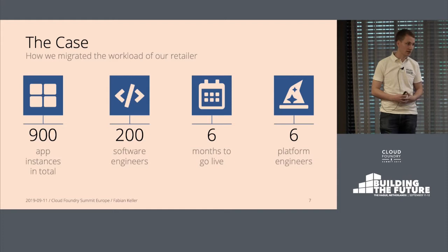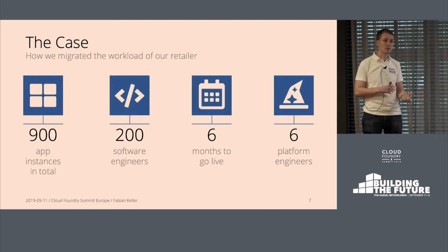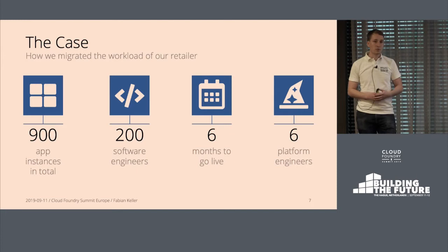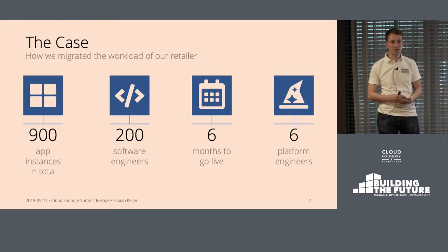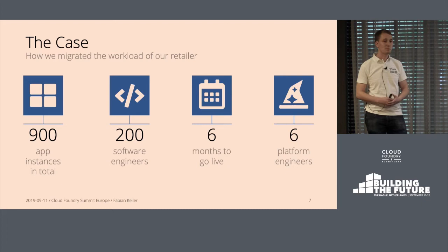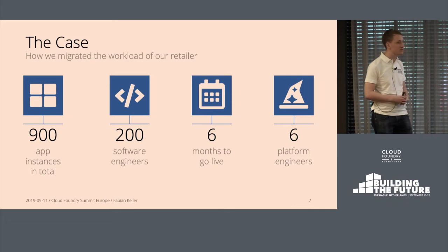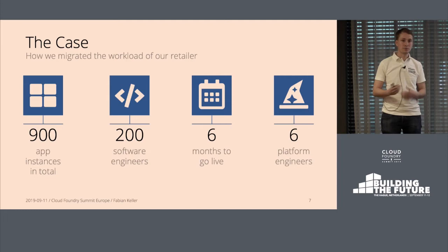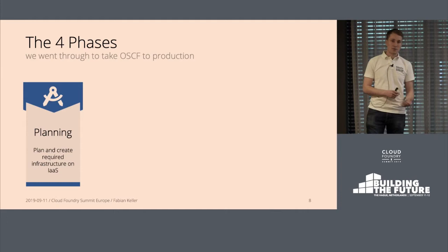We did this for a customer. Our case was we had around 900 application instances up and running on two foundations and we wanted to shift them to open source Cloud Foundry. There were about 200 software engineers involved and we had six months from project initiation to go-live — kind of an arbitrary number, but we made it. We were six platform engineers: three from the customer and three from our side, working as a combined team.